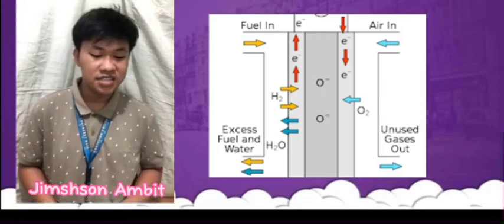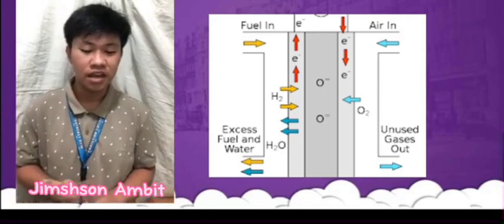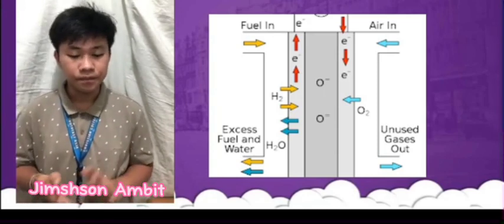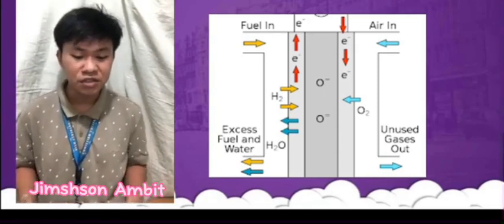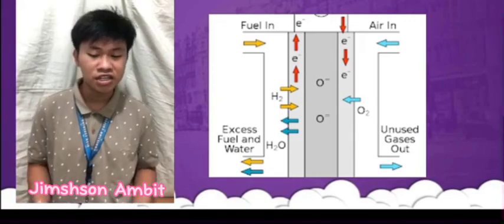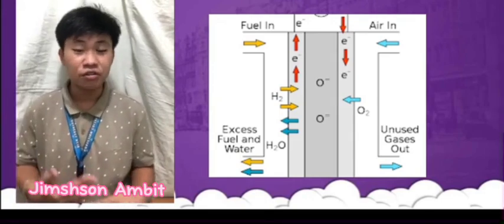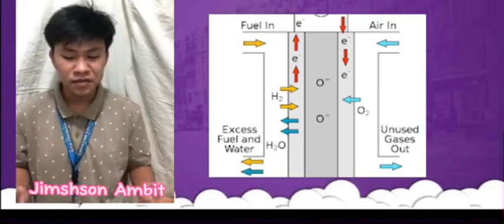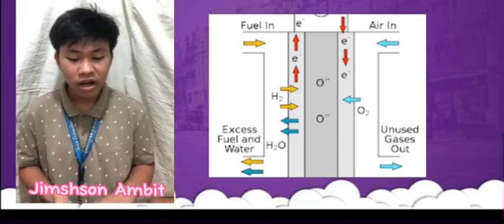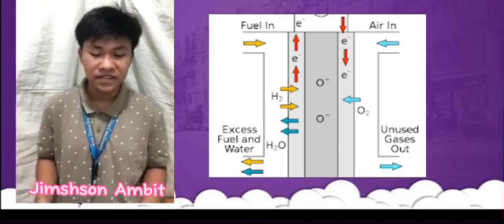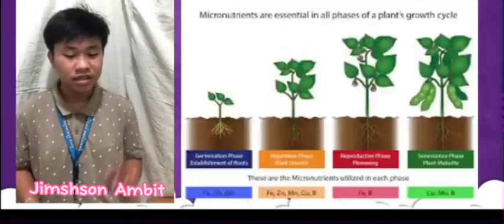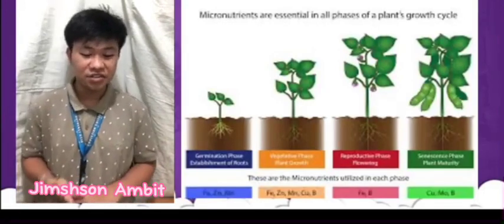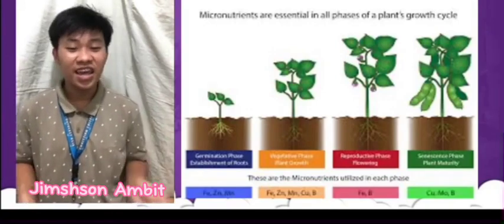The efficiency of a fuel cell is determined by the mass ratio of reactants and products. A fuel cell is a device that converts the chemical energy of a fuel into electrical energy. The efficiency of the fuel cell refers to how much of the chemical energy is converted into electrical energy. The higher the efficiency, the more electrical energy you get from a given amount of fuel. The amount of fertilizer you need to apply to your lawn is also determined by the mass ratio of fertilizer and soil.